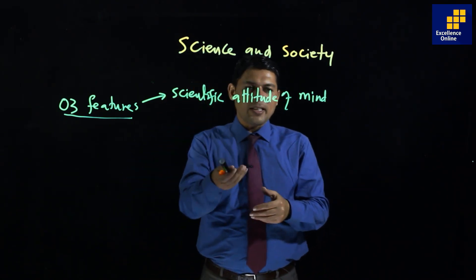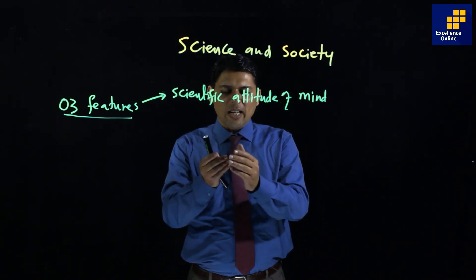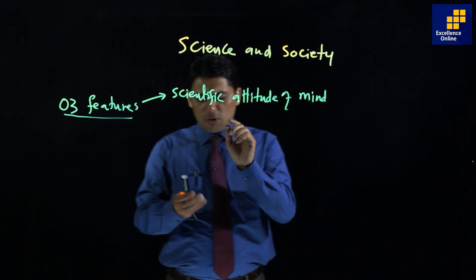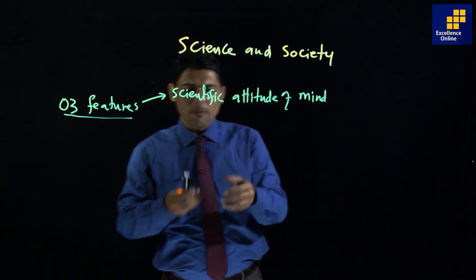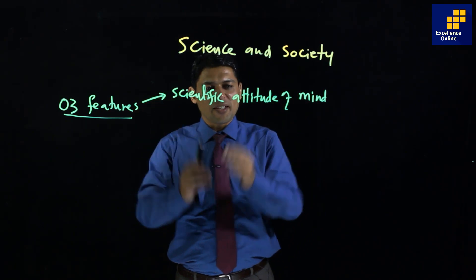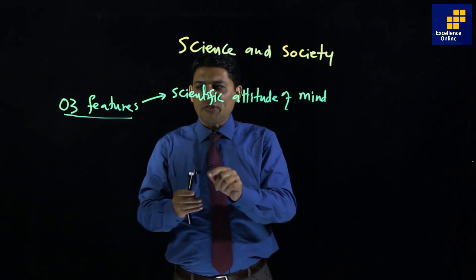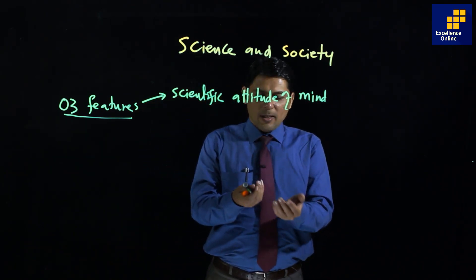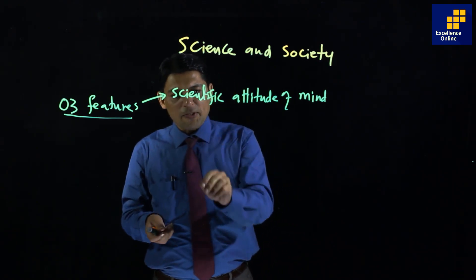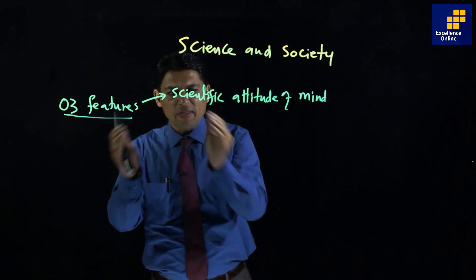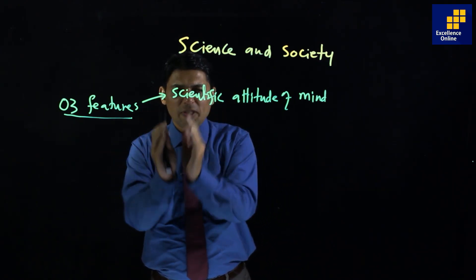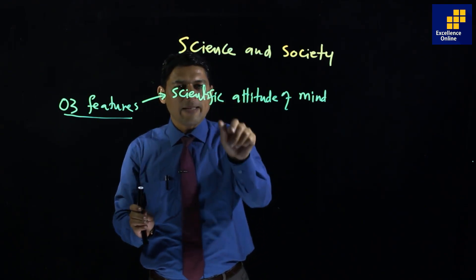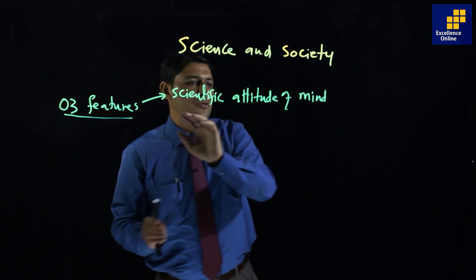Logic, questions, and evidence — that is the approach. For example, if you ask someone why they became a doctor and they say 'my parents said so,' that is not a scientific approach. But if they give four or five logical reasons, that is the scientific character of mind.